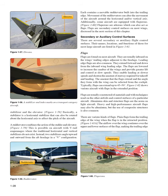However, some aircraft combine the stabilizer and the elevator — a stabilator is a horizontal stabilizer that can also be rotated about the horizontal axis to affect the pitch of the aircraft. A ruddervator combines the action of the rudder and elevator, possible on aircraft with V-tail empennages where traditional horizontal and vertical stabilizers do not exist. Instead, two stabilizers angle upward and outward from the aft fuselage in a V-configuration, each containing a movable ruddervator built into the trailing edge. Movement of the ruddervators can alter the movement of the aircraft around the horizontal and/or vertical axis. Additionally, some aircraft are equipped with flaperons — ailerons which can also act as flaps.